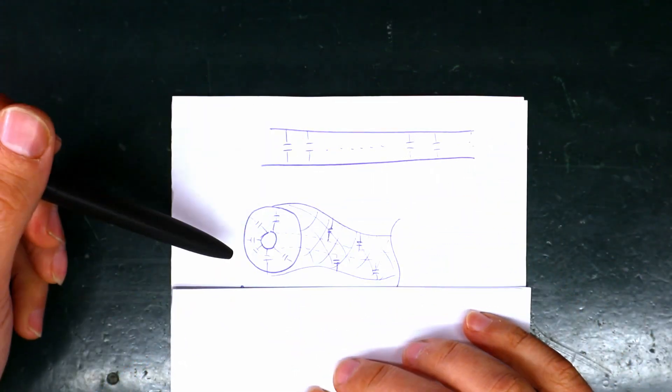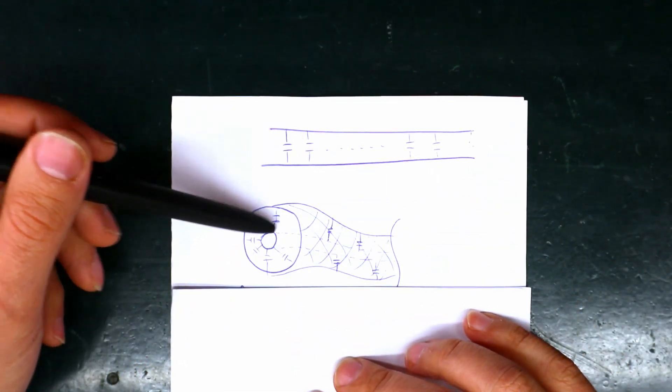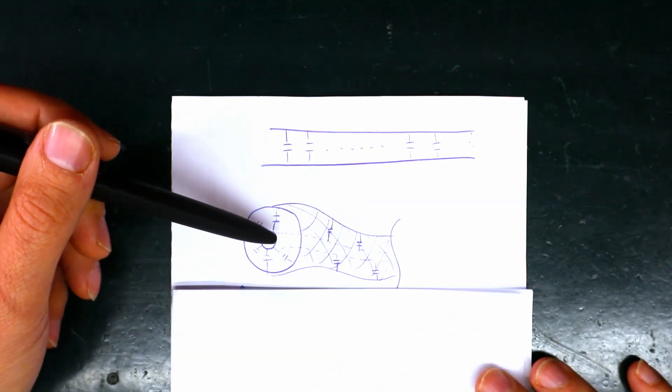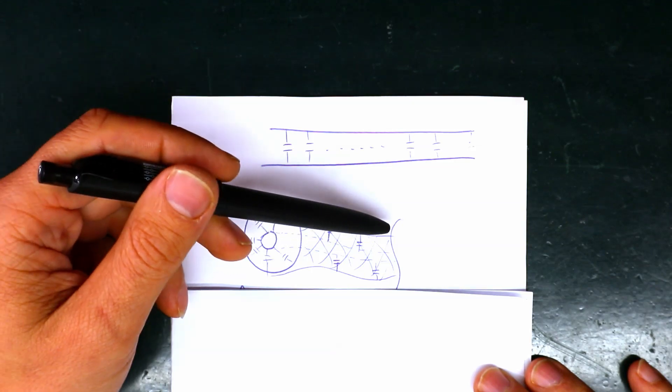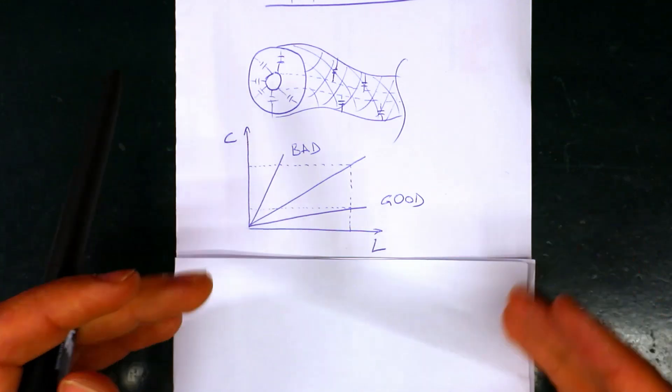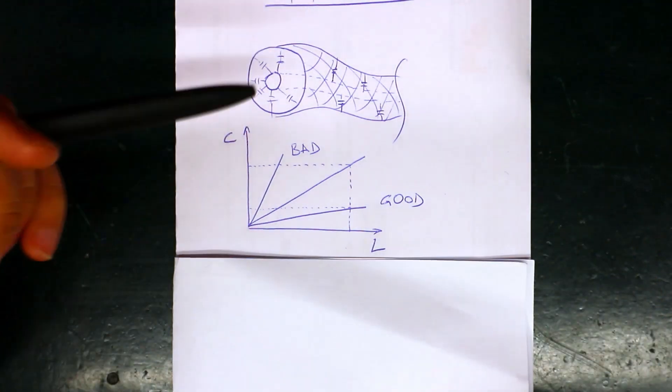The same is the situation with the guitar cables. So this is the core and this is the shielding of the cable. So there are many small capacitors all over the length of the cable. Note that the relationship between the length of the cable and the capacity of the cable is linear.